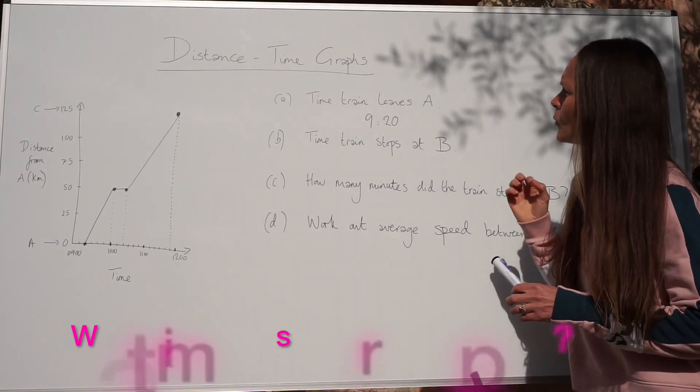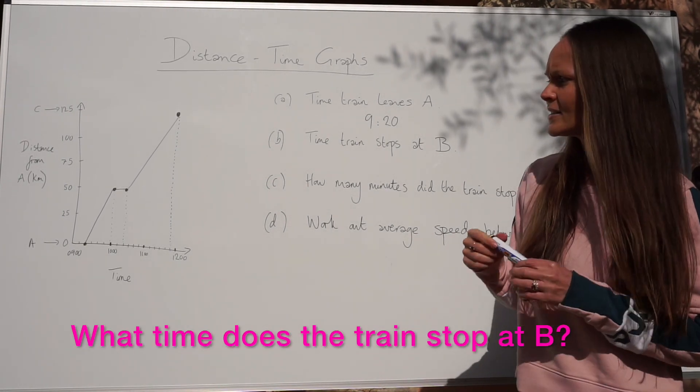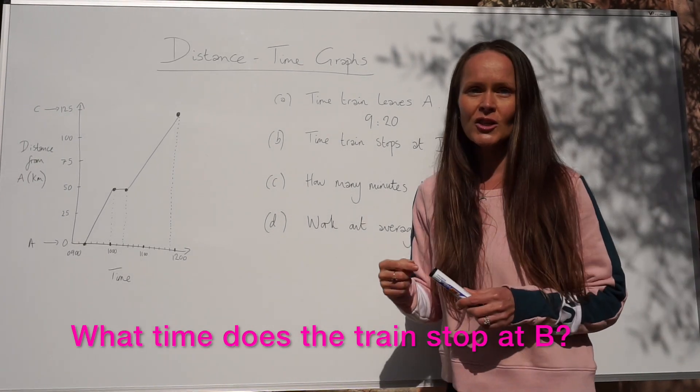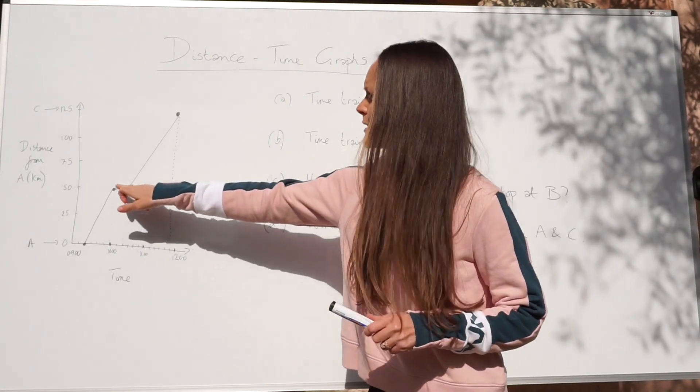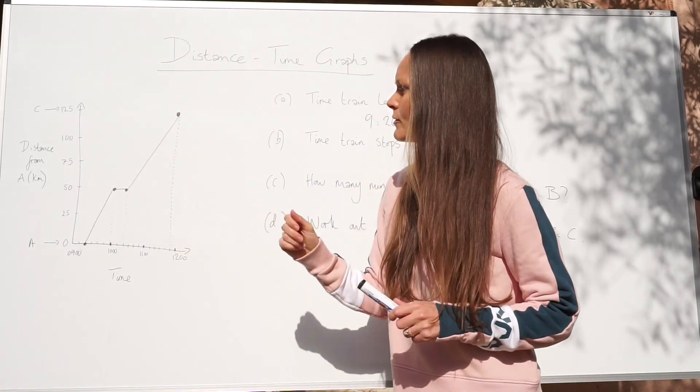For part B, what time does the train stop at B? So in the question it tells us that the train stops at B. So this is B here, where the train is stationary.